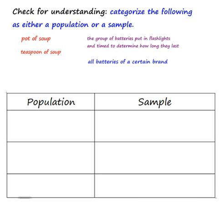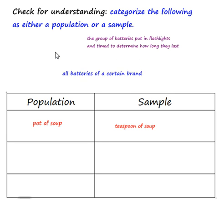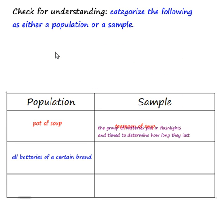Let's check for understanding. Categorize the following as either a population or a sample. A pot of soup versus a teaspoon of soup — the pot of soup is the population, and the teaspoon is a subset of the pot, so it is a sample. For batteries: a group of batteries put in flashlights and timed is the sample, while all batteries of a certain brand is the population — the larger group.